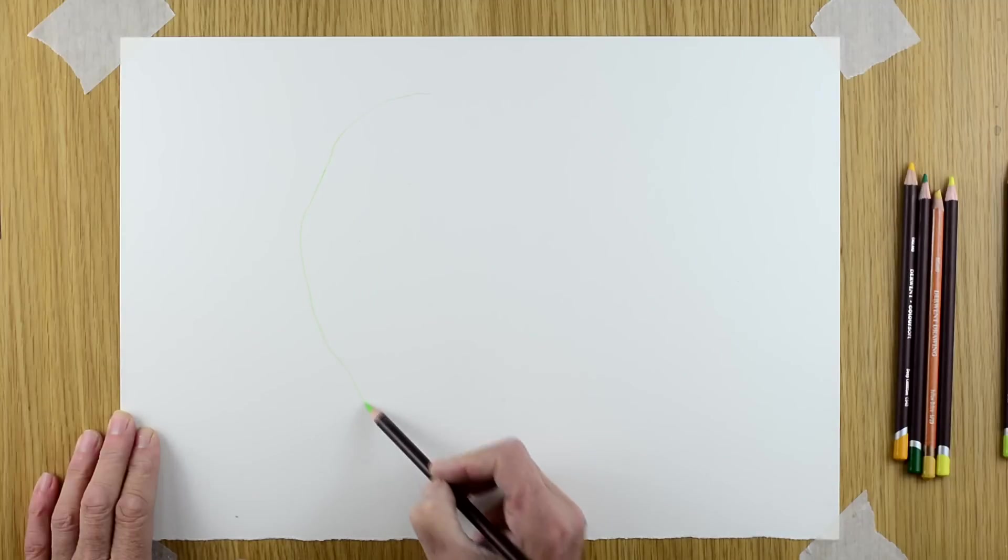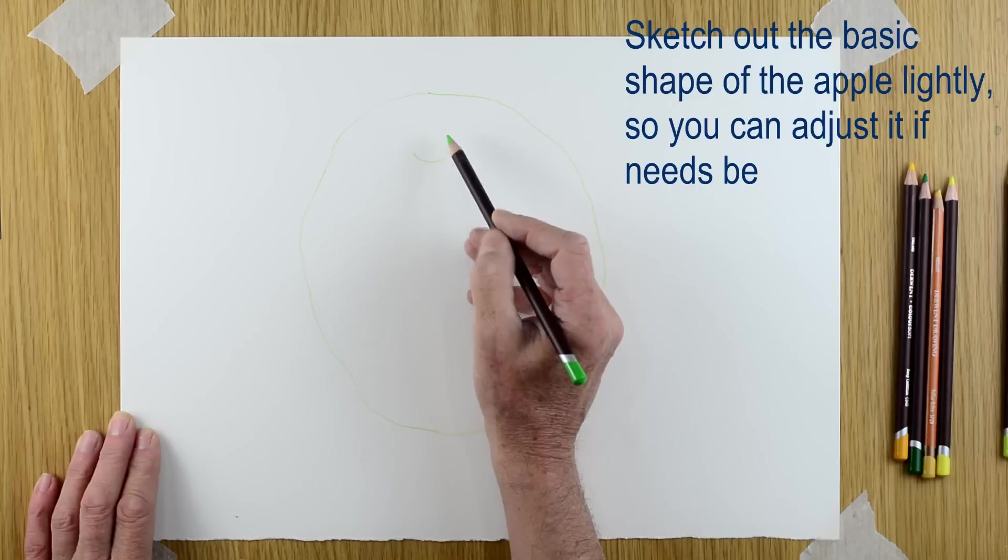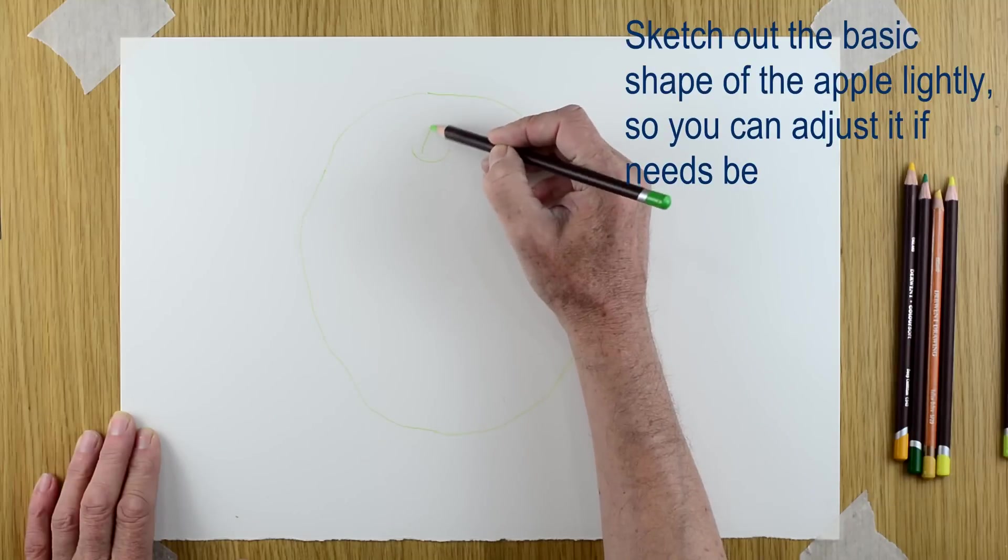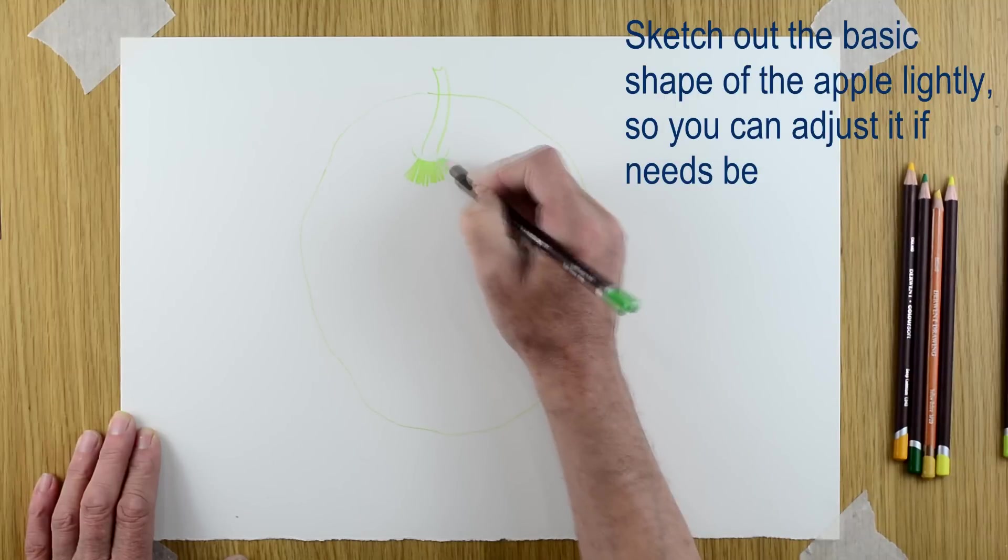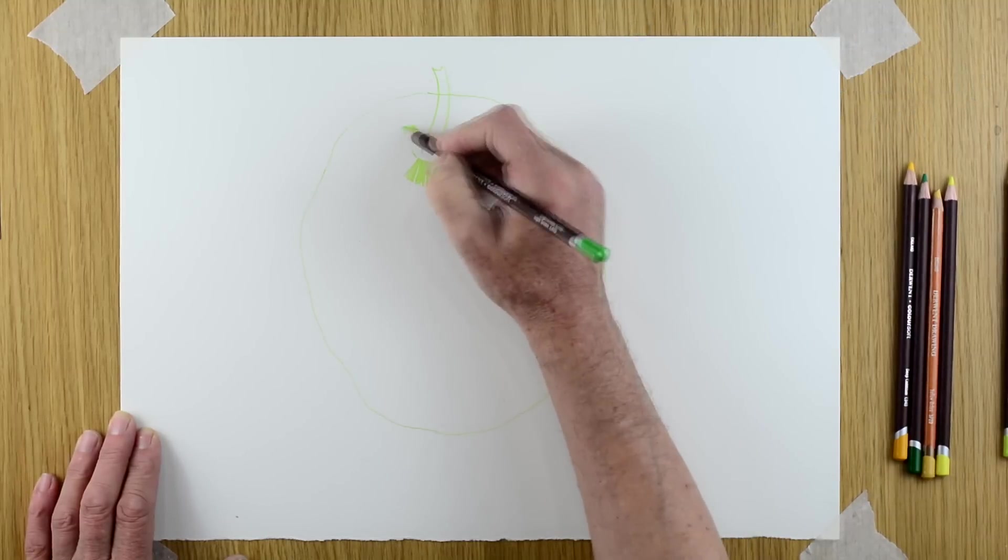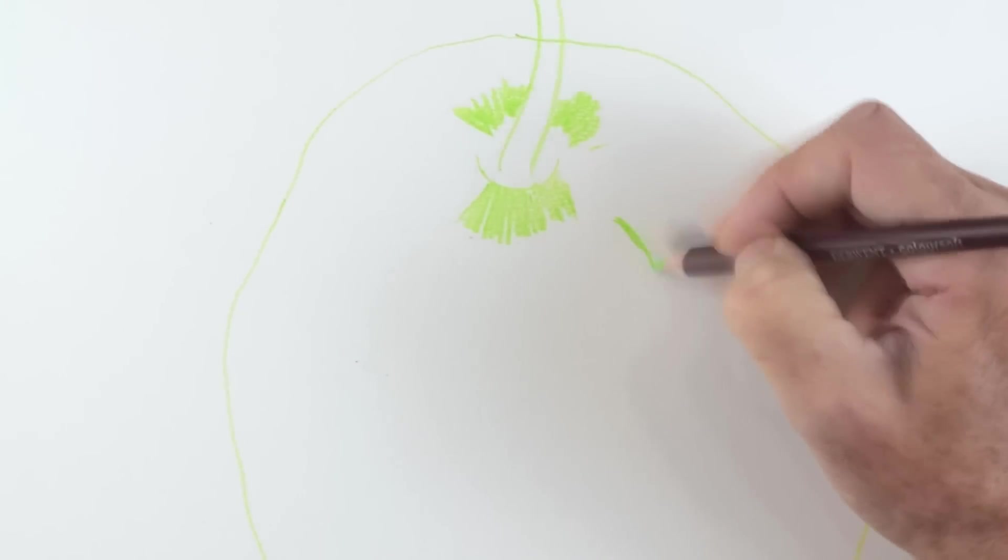You'll notice that I'm sketching out the outline of the apple in a very pale green. You'll also notice that I've sped up this video by about twice the normal speed. Otherwise you're going to be here all day watching it and you don't really want to be doing that. You want to be drawing your own drawings.